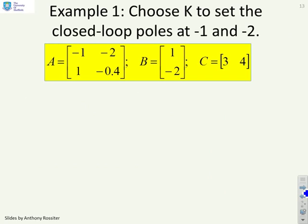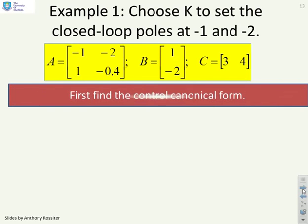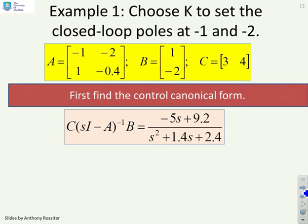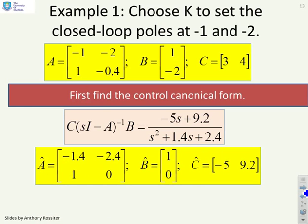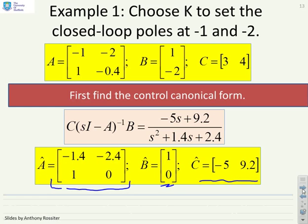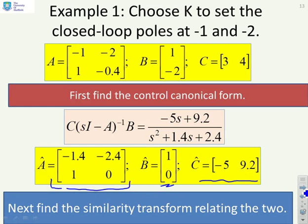Example 1: the given A and B are clearly not in control canonical form, so we need to use the transformation approach. Step 1 is to find the control canonical form. Finding the transfer function gives (-5s + 9.2) / (s² + 1.4s + 2.4). The control canonical form has  with [-1.4, -2.4] in the top row, and we have B̂ and Ĉ as well.